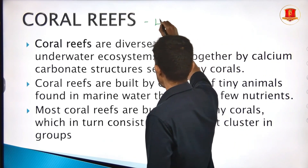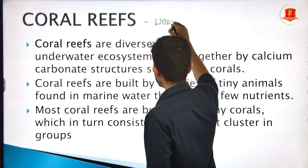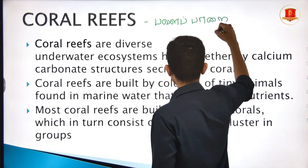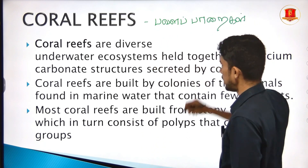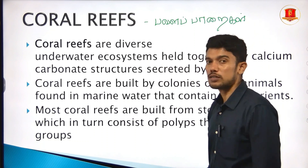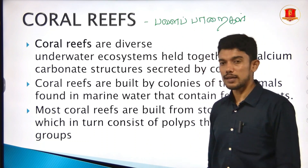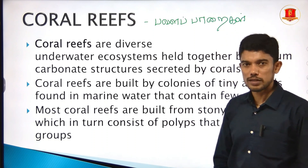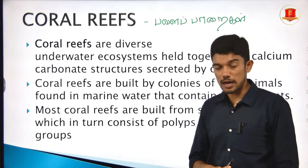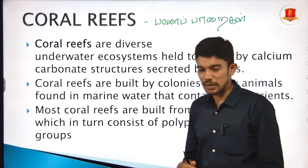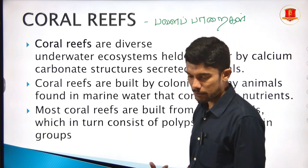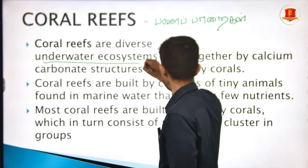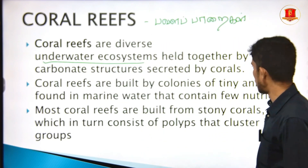Coral reefs are found in places like the Gulf of Mannar and Andaman. They are basically the rainforests of the sea — underwater ecosystems that support enormous biodiversity.